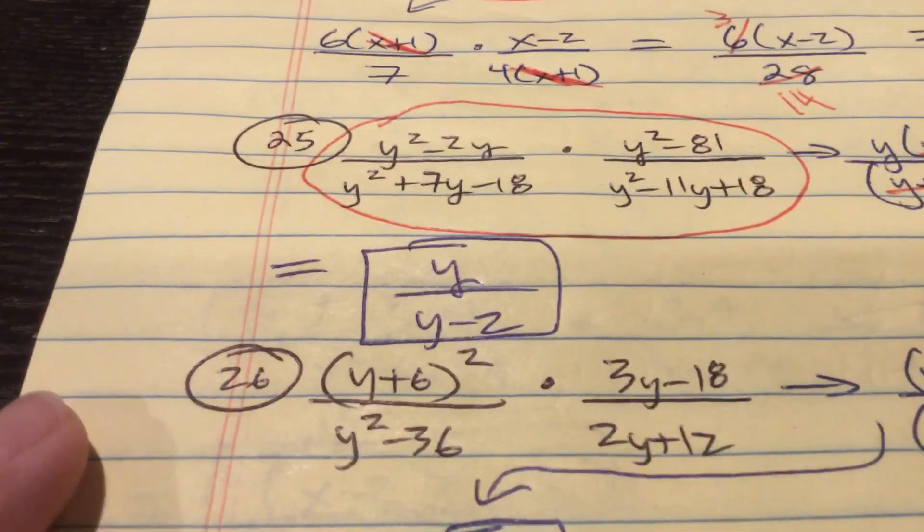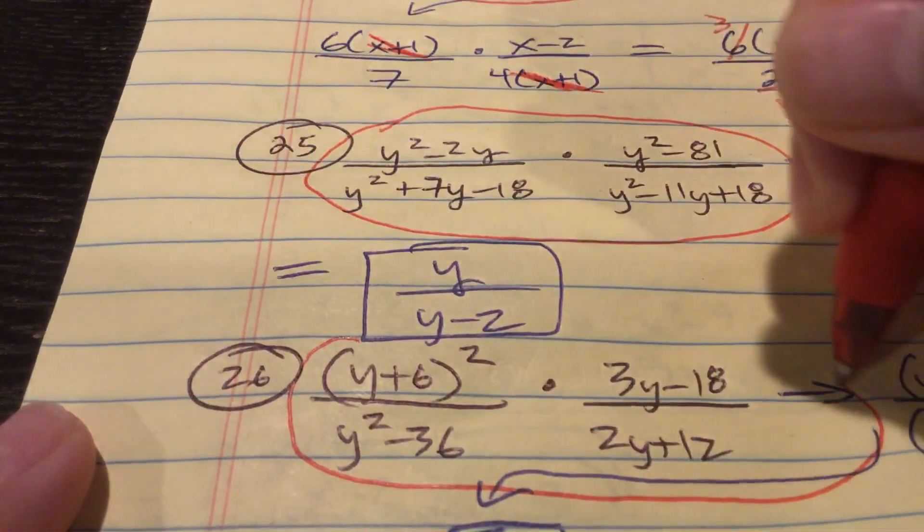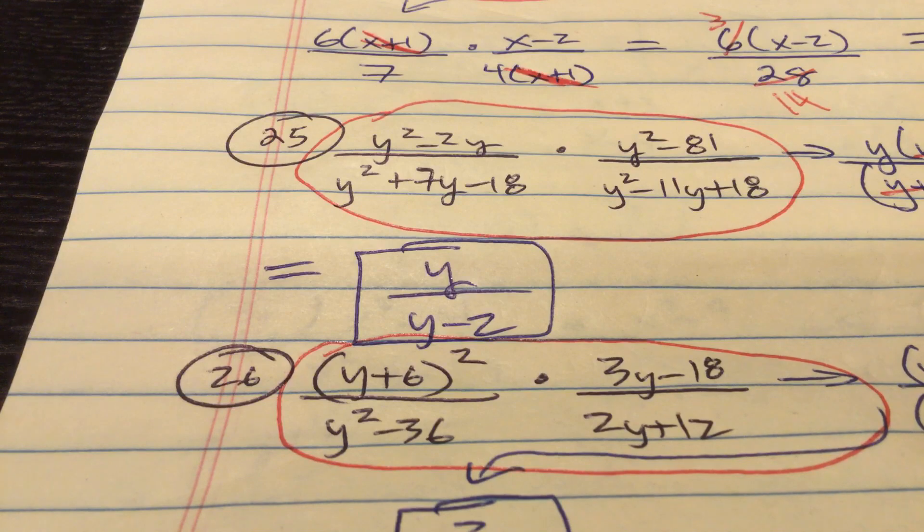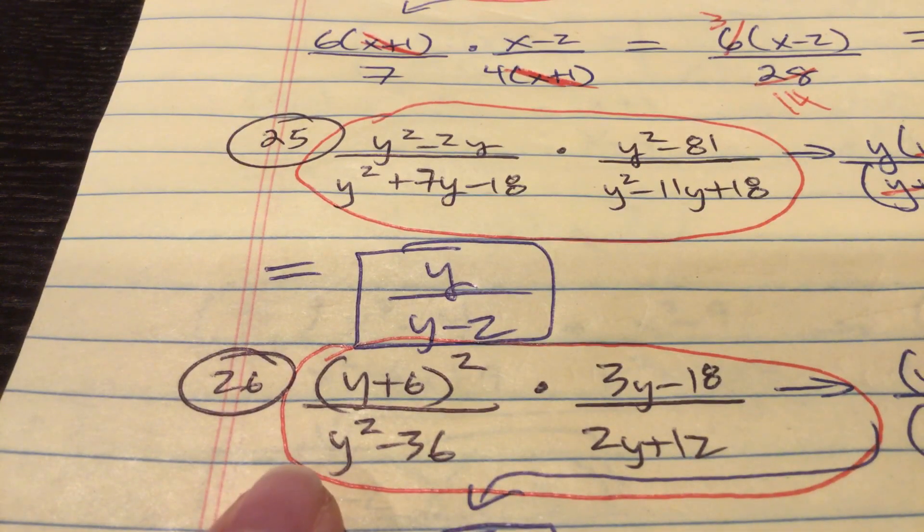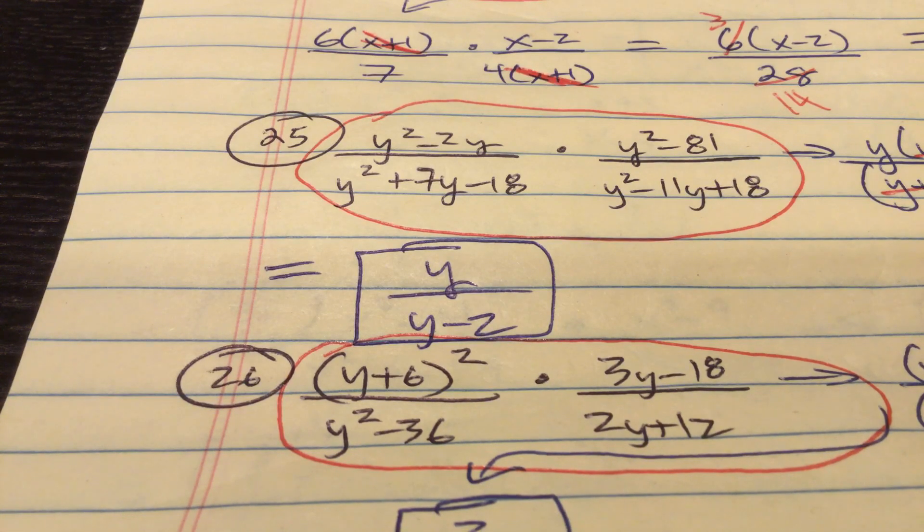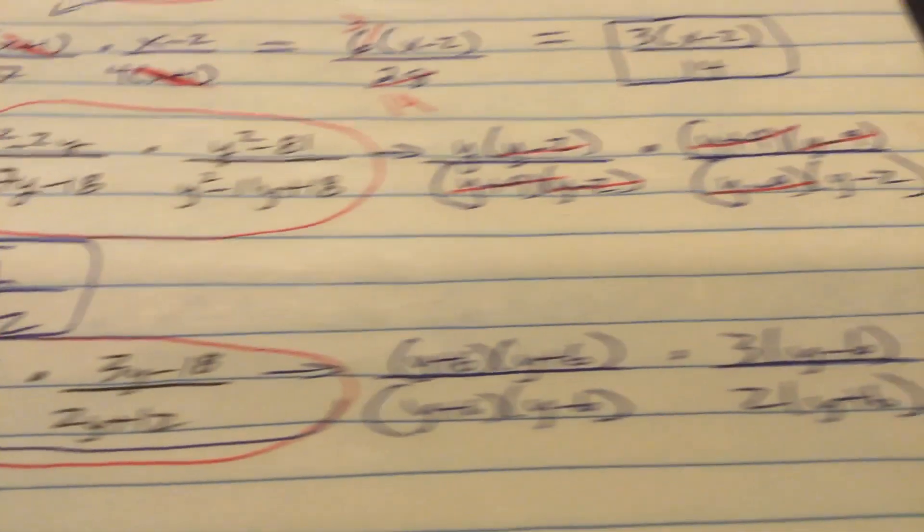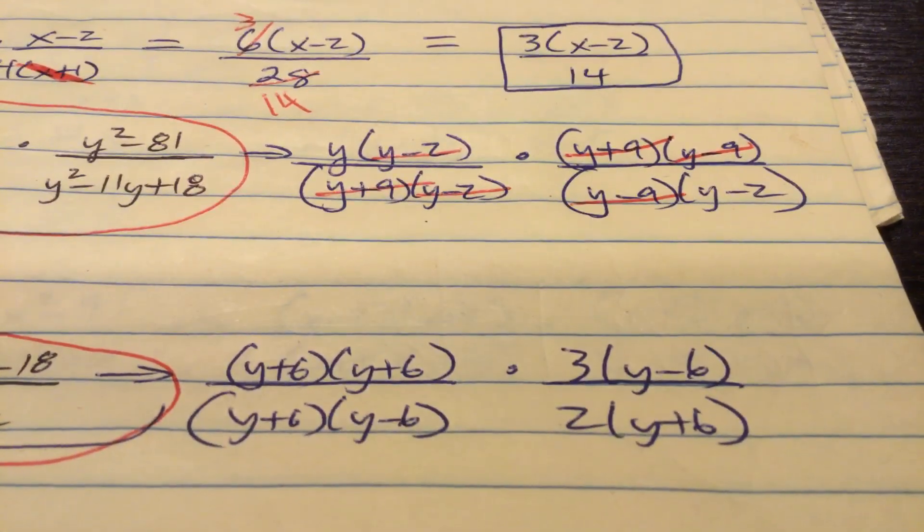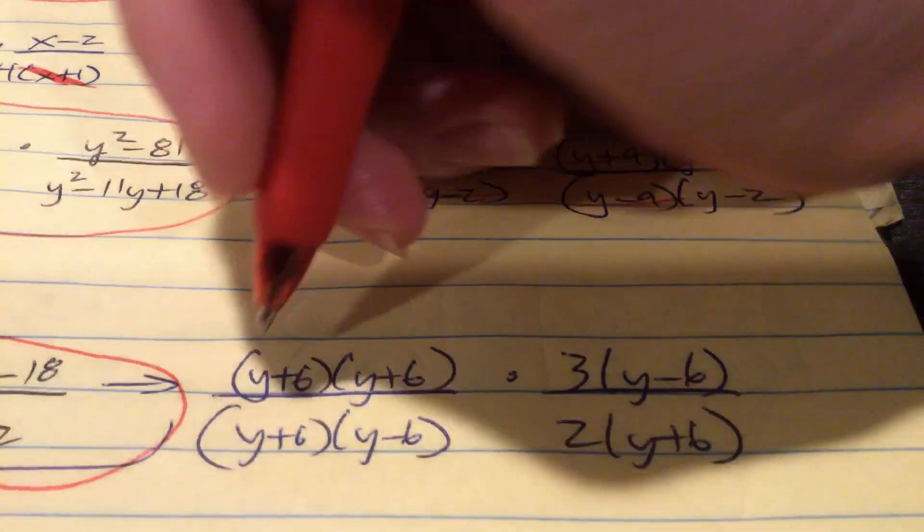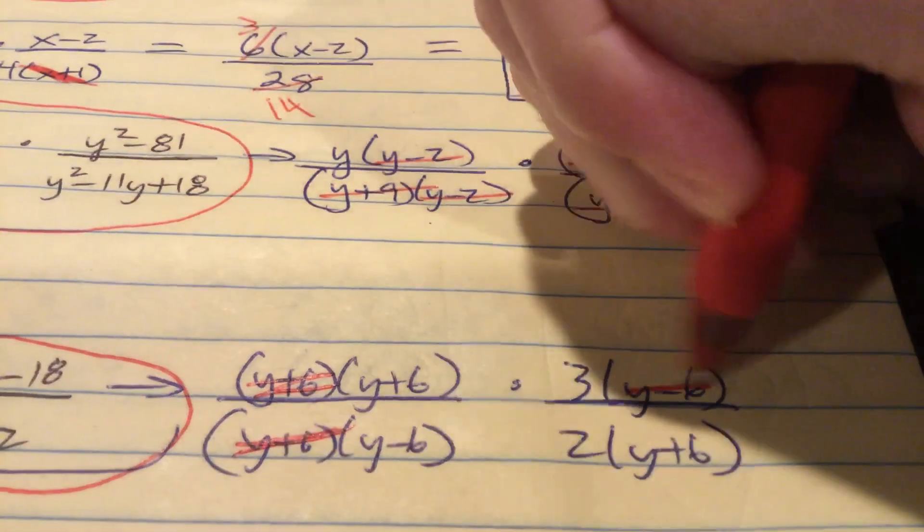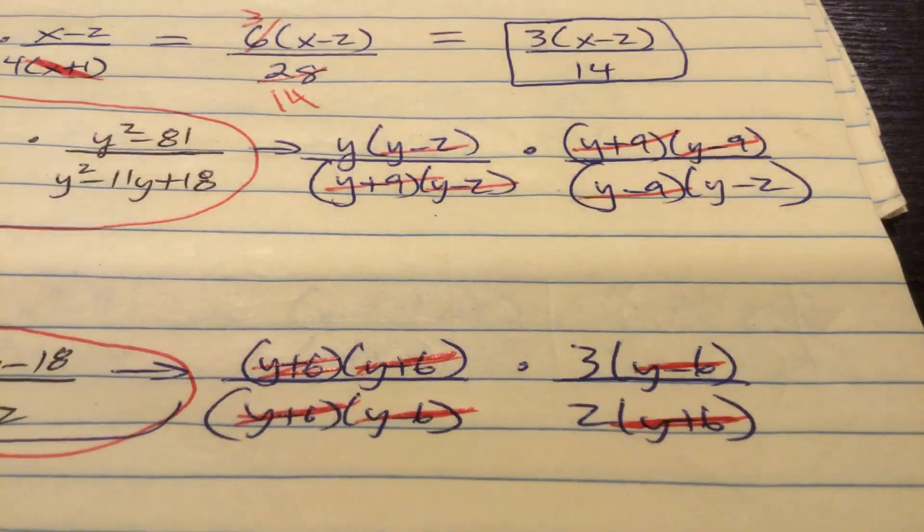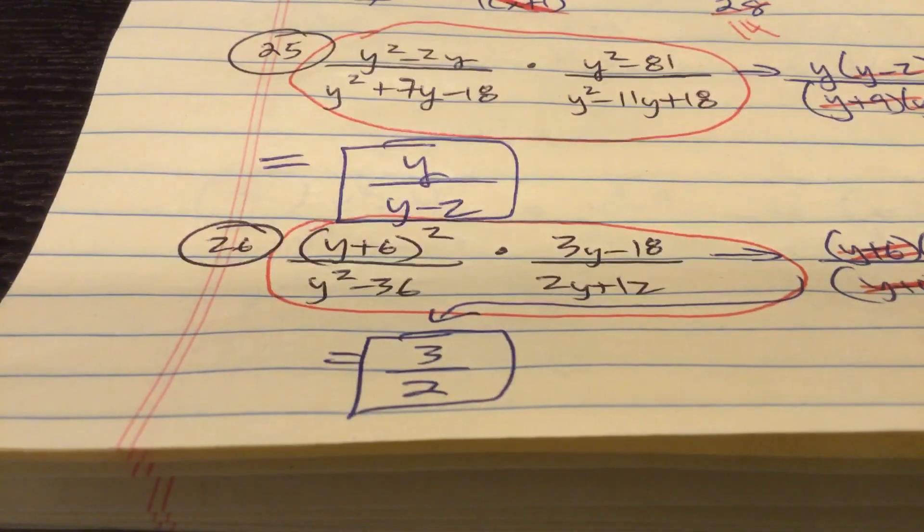Alright. Again, pause this whenever you need to. But on 26, here is the original 26. First off, y plus 6 squared. That means it's y plus 6, y plus 6. The bottom factors would be y plus 6, y minus 6. The top is 3 times y minus 6. The bottom is 2 times y plus 6. Take that down to factor town. Well, we can't go. It's closed. But, you know, there's the idea. So, what's going to cancel? y plus 6, y plus 6, y minus 6, y minus 6. Holy cow! y plus 6, y plus 6. Just left with 3 over 2. 3 over 2 is your final answer. And we're moving, folks.